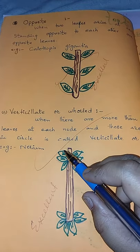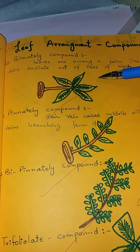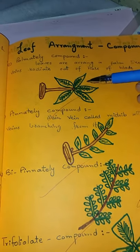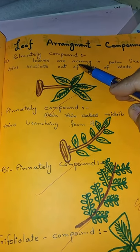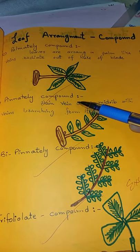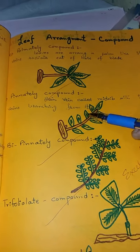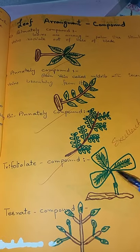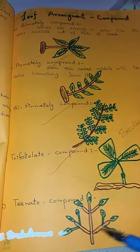For example, this is a medium-order plant showing leaf arrangement. Compound leaves include the palmate compound, which is a palm-like structure; the pinnately compound, which has a branching-like structure; the trifoliate compound; and the ternate compound. These represent different compound leaf arrangements.